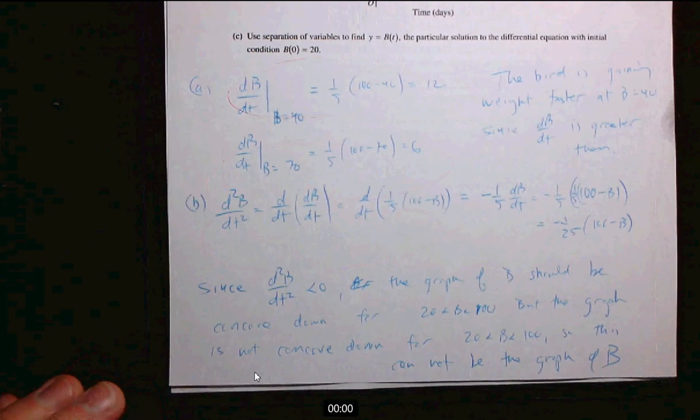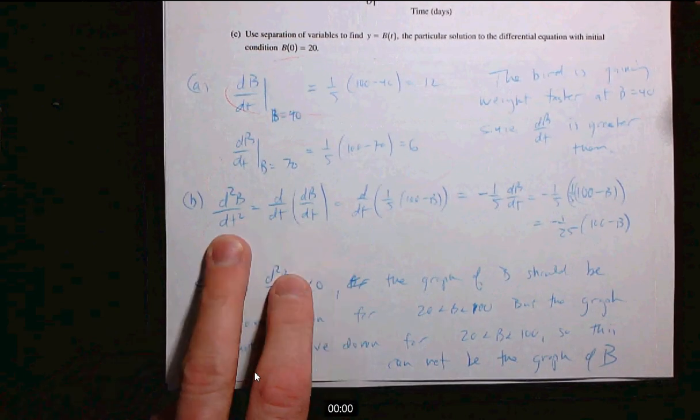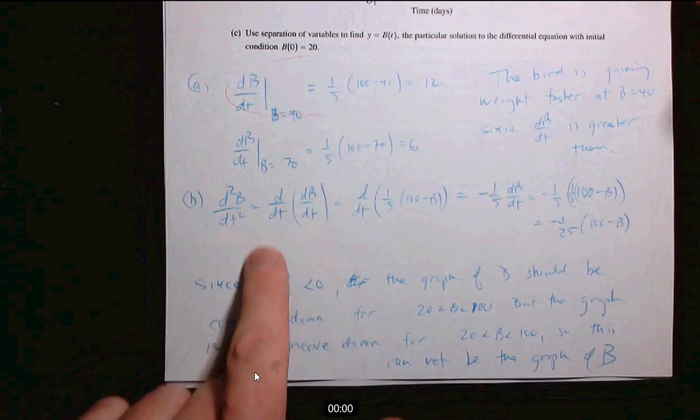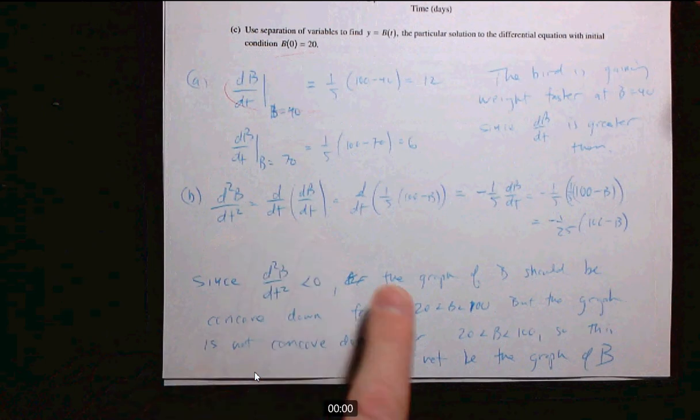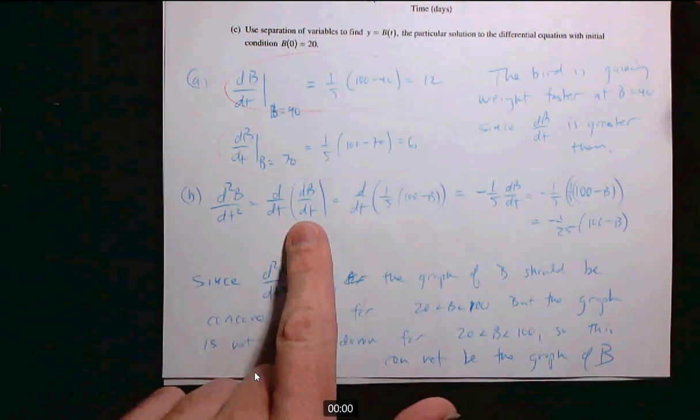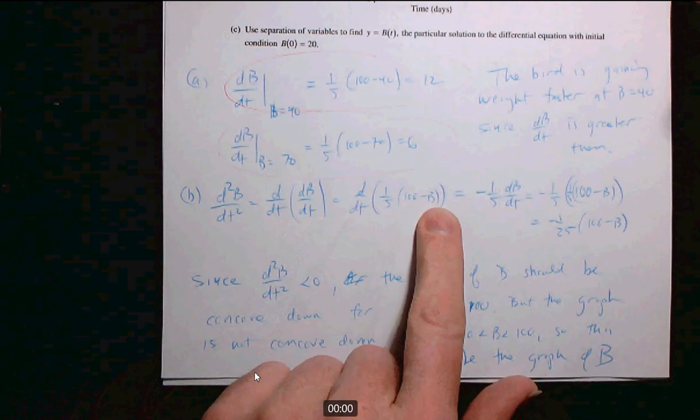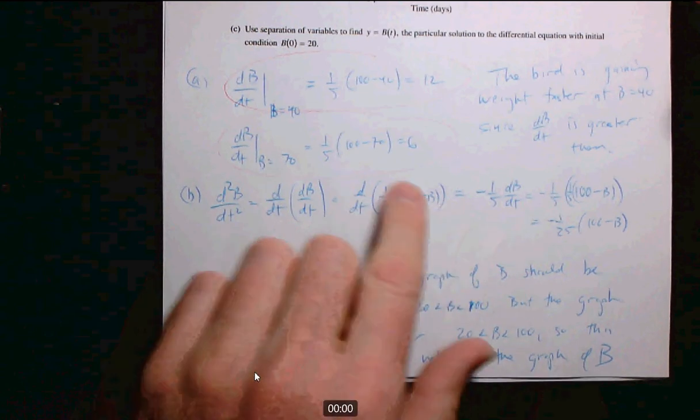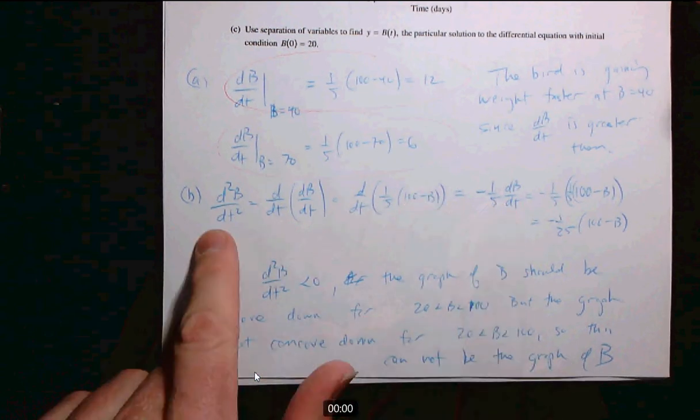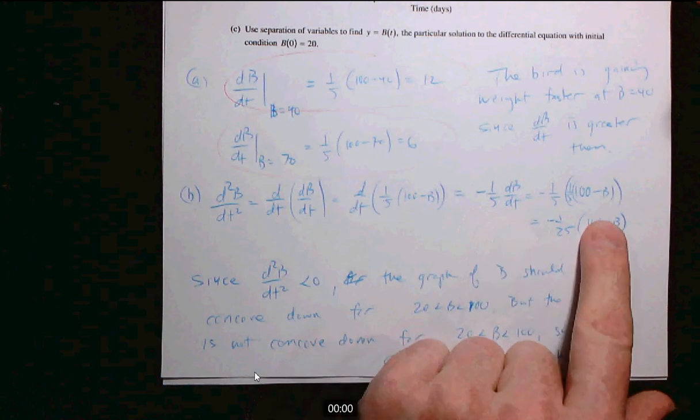Part B, again, most people handled well. Just be careful when you compute the second derivative. You have to use the chain rule because you're computing the derivative of the first derivative, which is given by this. When you push this through, you have to use the chain rule on B. And that gives you that the second derivative is actually negative one-fifth the first derivative, which you can then sub back in with this equation.